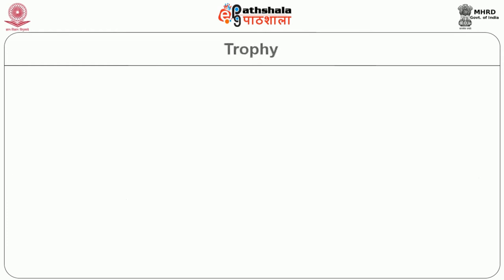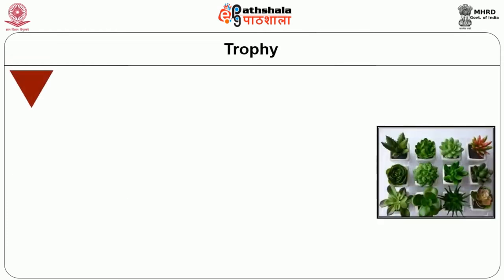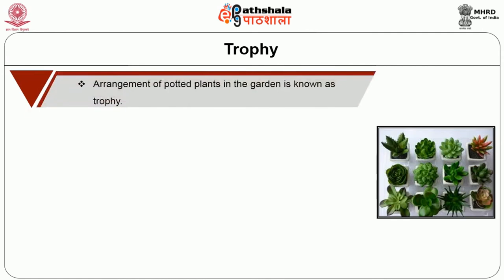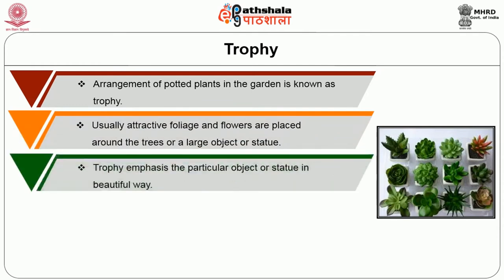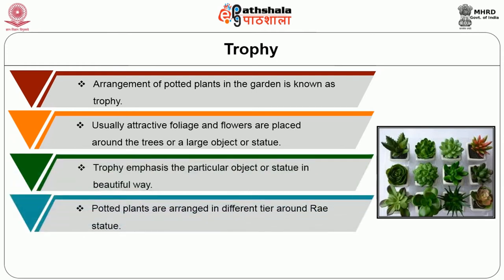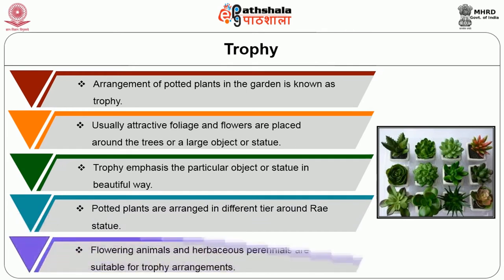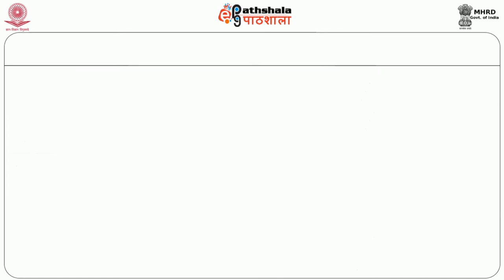Trophy: arrangement of potted plants in the garden is known as trophy. Usually attractive foliage and flowers are placed around trees or large objects or statues. Trophy emphasizes the particular object or statue in a beautiful way. Potted plants are arranged in different tiers around the statues. Flowering annuals or herbaceous perennials are suitable for trophy arrangements.